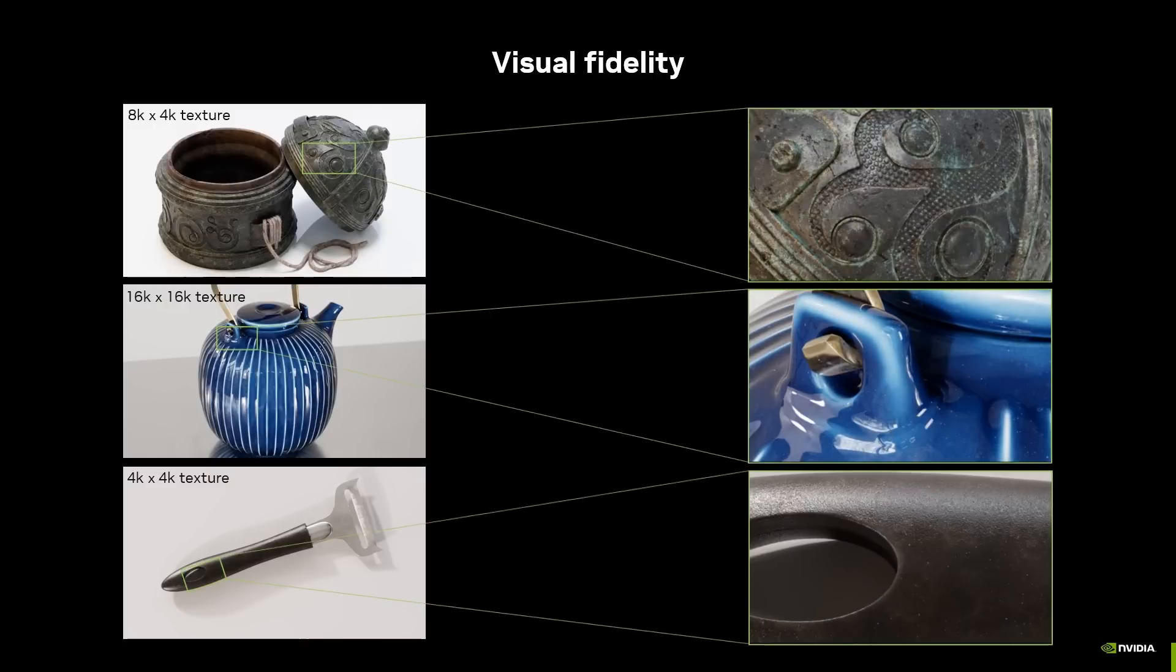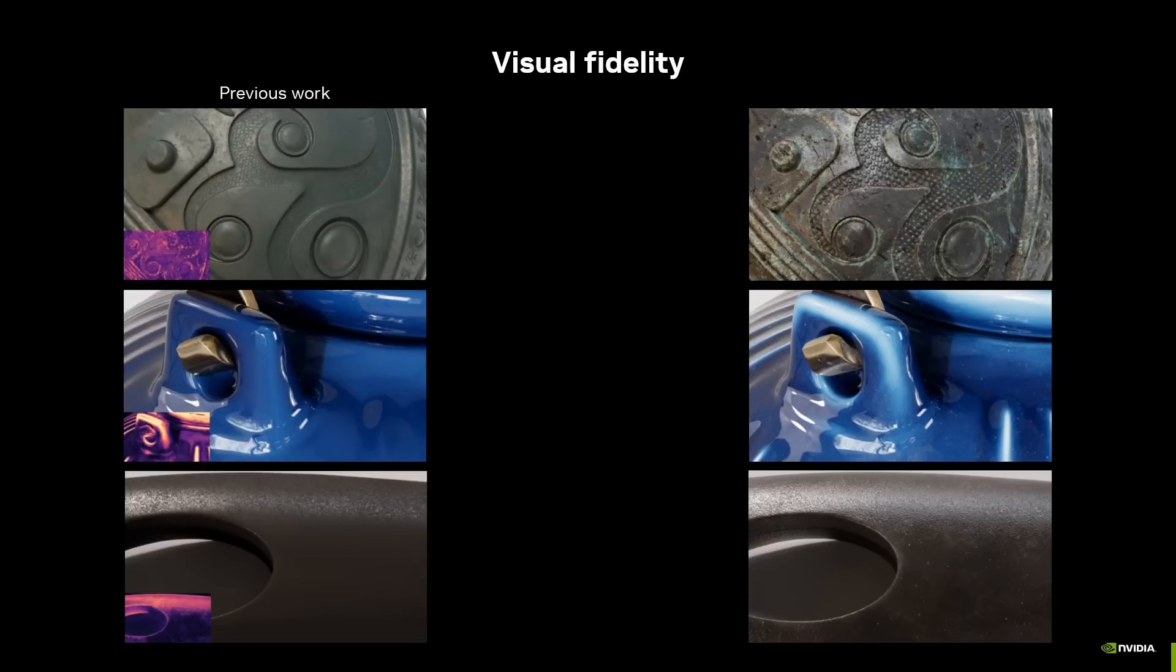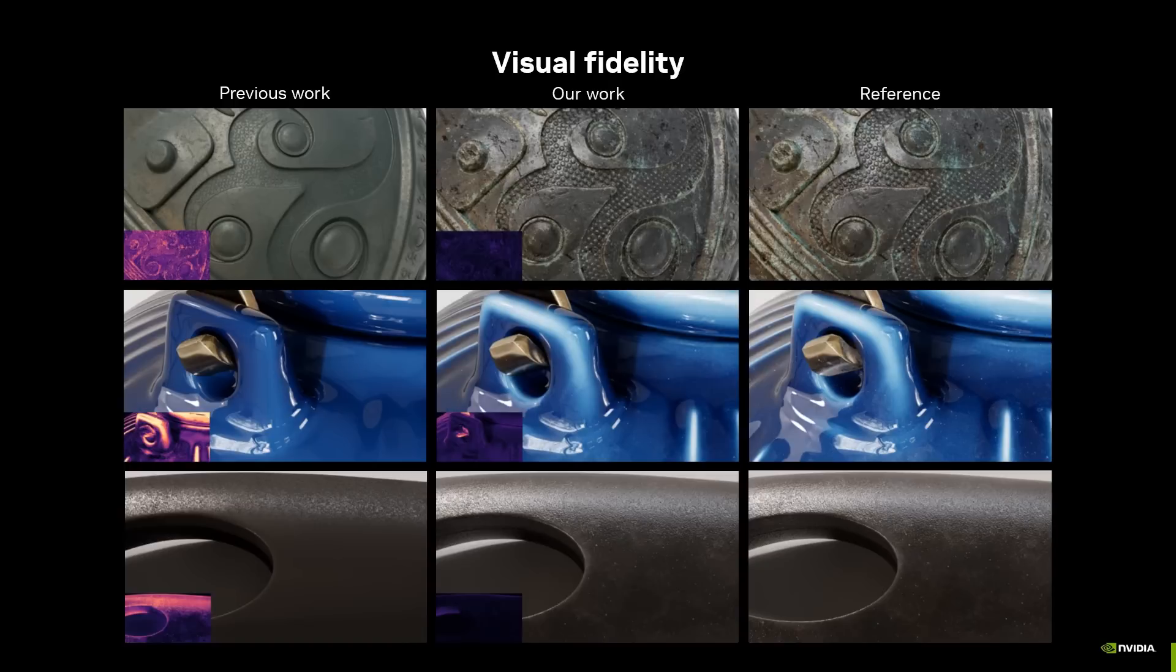In a game, this allows players to zoom in and to enjoy the kind of detail that previous neural models, here on the left, can't capture. Our neural model in the center here reproduces the detail and rich subtleties that make the reference materials so appealing.